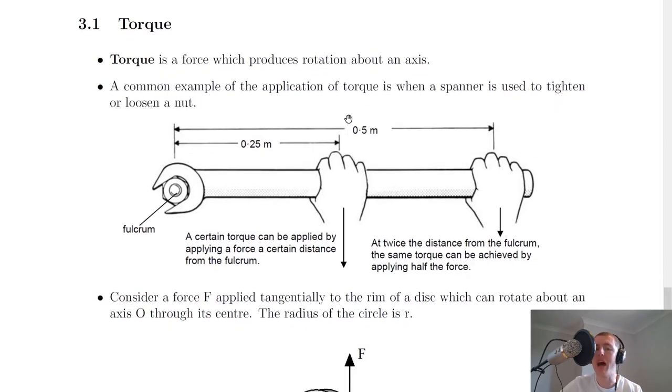A common example of the application of torque is when a spanner is used to tighten or loosen a nut. For example, if you were to hold your spanner at this point here, you're going to find it harder to tighten or loosen that bolt or nut. The reason is that you're close to the axis of rotation.